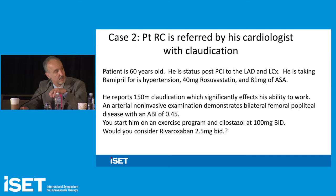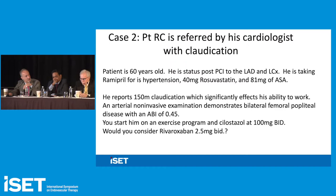I would manage his peripheral arterial symptomatology — see how he does with the exercise program, see if he needs an intervention. If the cilostazol doesn't work, I would get him off cilostazol, put him on aspirin, and then consider and discuss rivaroxaban with him. That's the sequencing I would use.